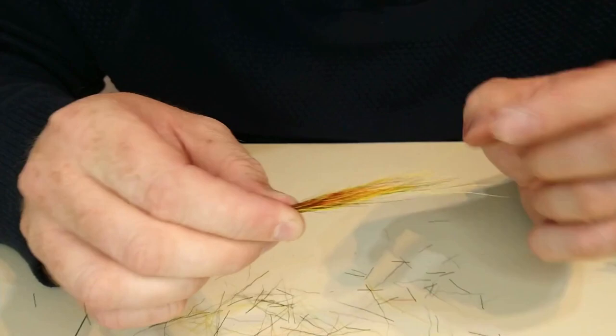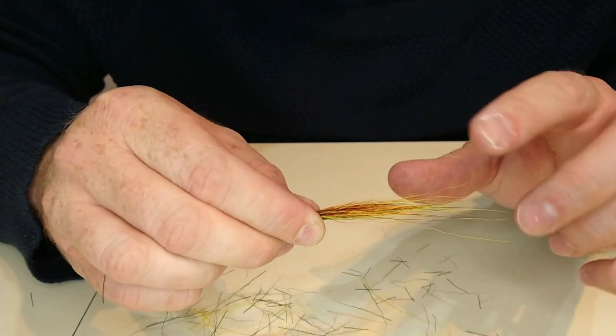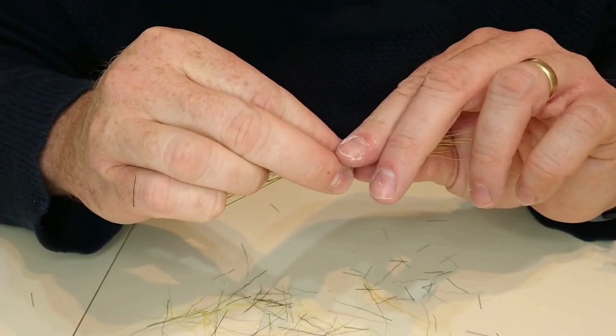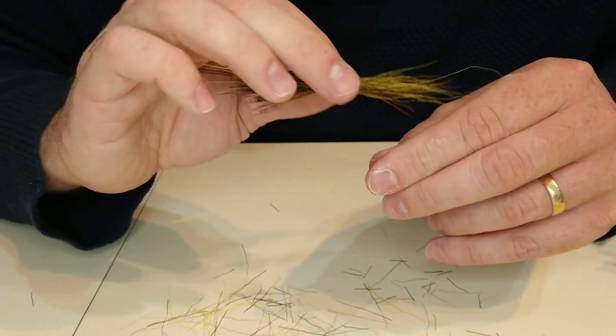You can see there's some big hairs out here, and then the bulk is probably about this section. So I want to just grab these bigger hairs. I'm trying to line them as best I can. The hair stacker will finalize this, but just try and get it as nice as possible so it's easier to get in the hair stacker.